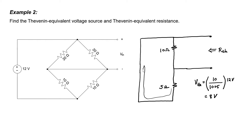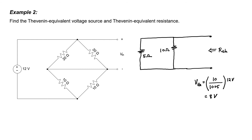Sliding the 5 ohm resistor up on the circuit diagram makes it clear that the 10 ohm resistor is in parallel with the 5 ohm resistor. The Thevenin equivalent resistance is thus 5 ohms in parallel with 10 ohms. Multiplying in the numerator and adding in the denominator gives 50 divided by 15, which is 3.33 ohms. I now have my Thevenin equivalent voltage and resistance.